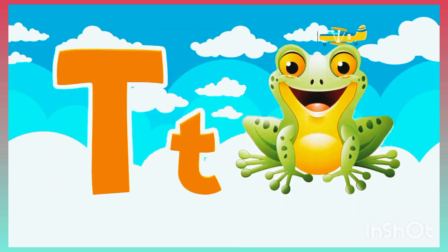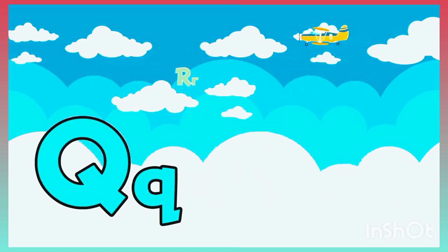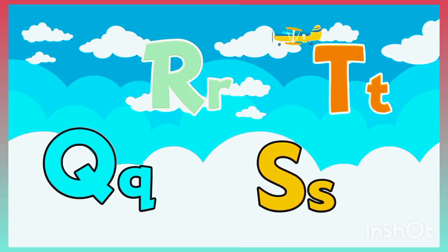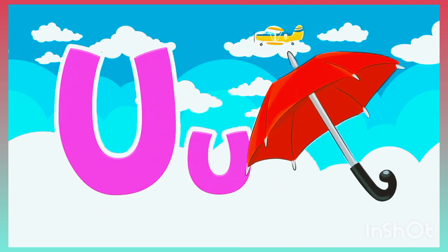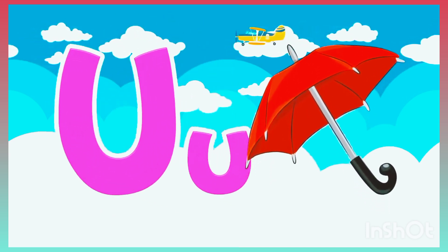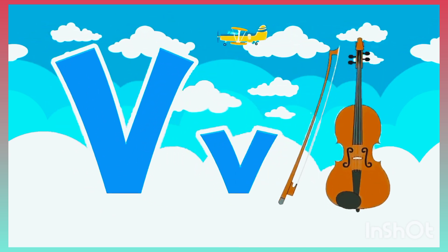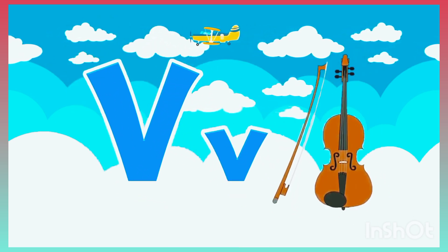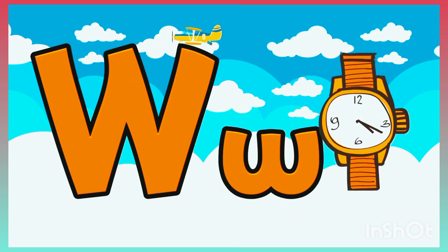U is for umbrella, u-u-umbrella. V is for violin, v-v-violin. W is for watch, w-w-watch.